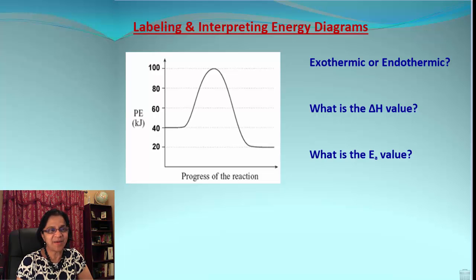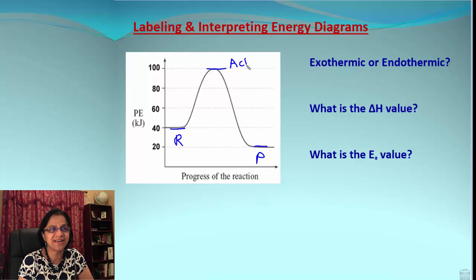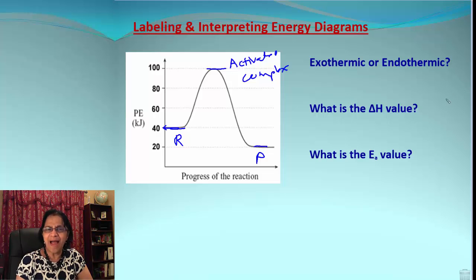Here is one energy diagram — let's label and interpret it. The beginning point is the reactants, the end point is the products, and the mountain top is the activated complex. We need to find out: what kind of reaction is this, what is the value of enthalpy, and what is the energy of activation? Let's work backwards.